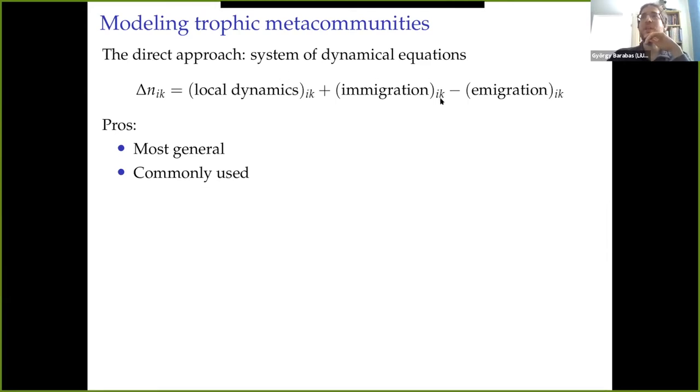Similarly, with the immigration and emigration scenarios, in principle, they can be as complicated as they want. Although in practice, usually it's some sort of simple proportional representation of immigration, weighted by some function of the distance between various patches. It also has the advantage that this is probably the most commonly used way of modeling metacommunities. One version or another of this kind of dynamical general ODE or difference equation system is what comes up the most.